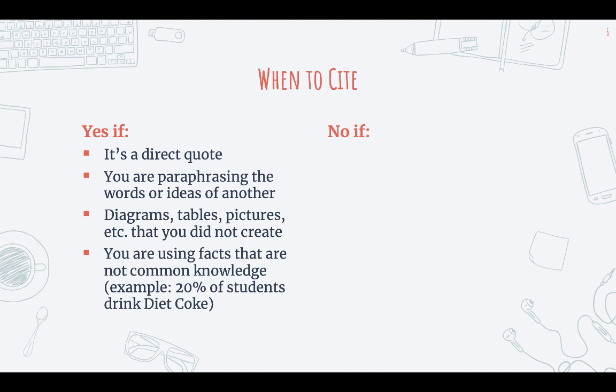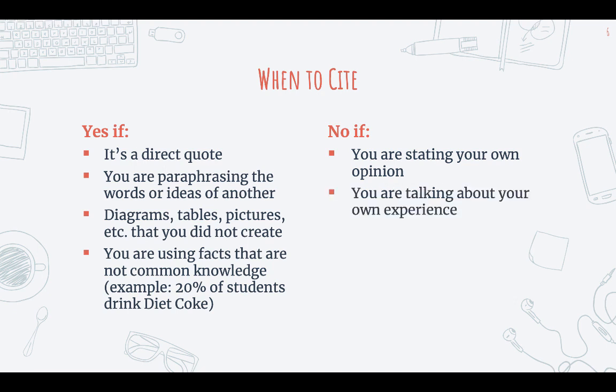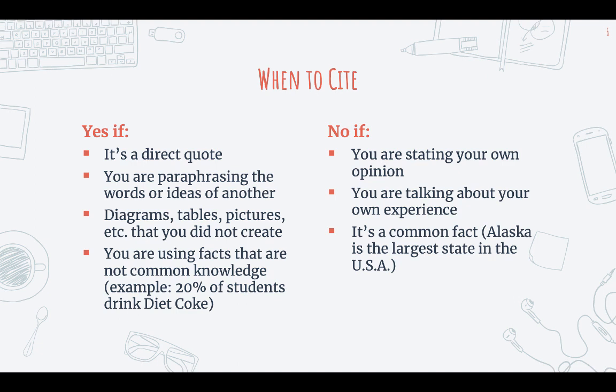You don't need to cite things like when you are stating your own opinion, when you are talking about your own experience — so if you're talking about something that happened to you or your own life experience, you don't need to cite that. Something that's a common fact — for example, Alaska is the largest state in the United States. If you're unsure whether it's a common fact or not, it's better to cite than not to cite.